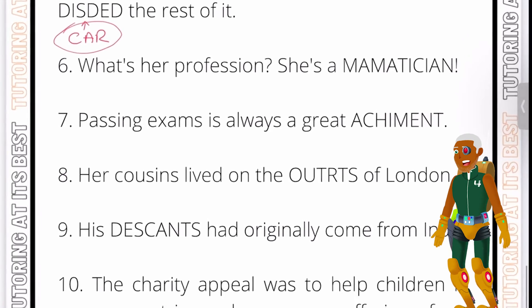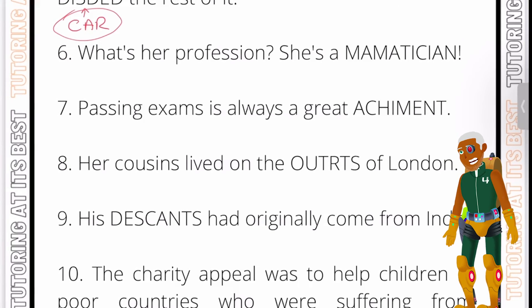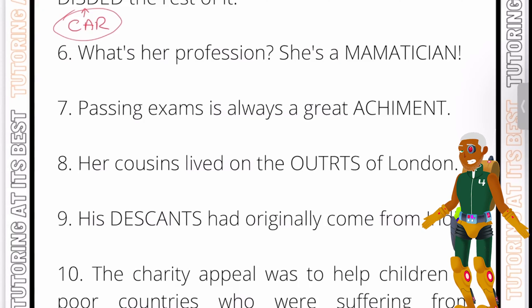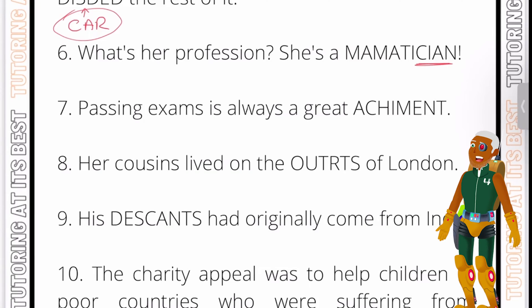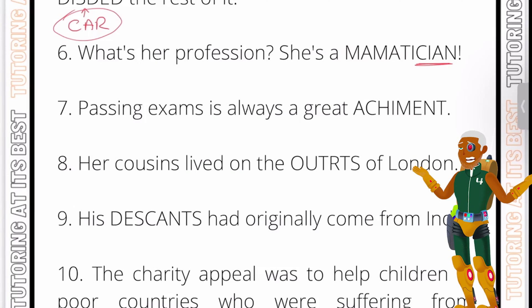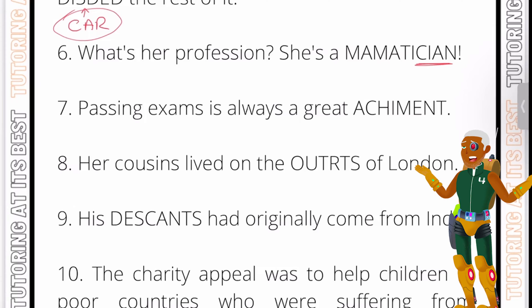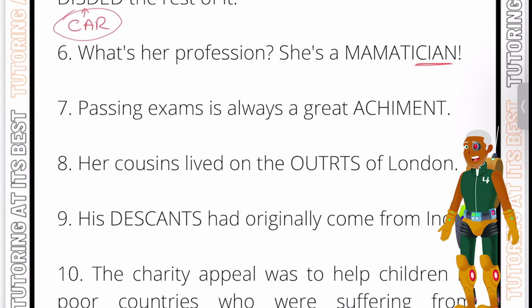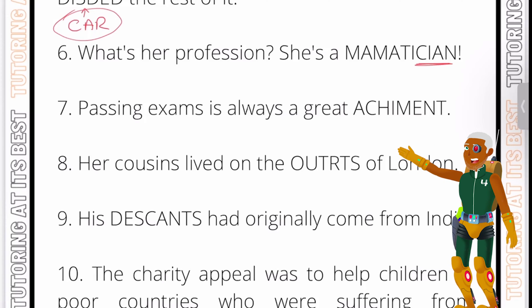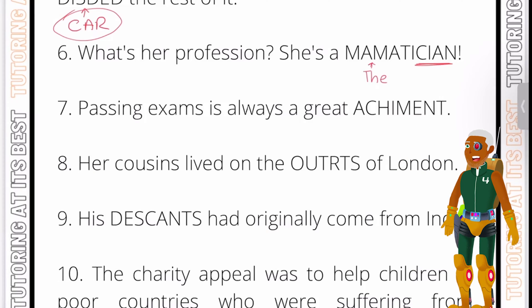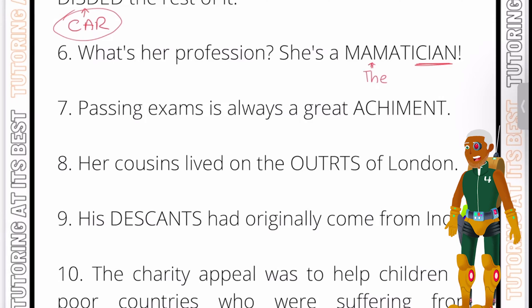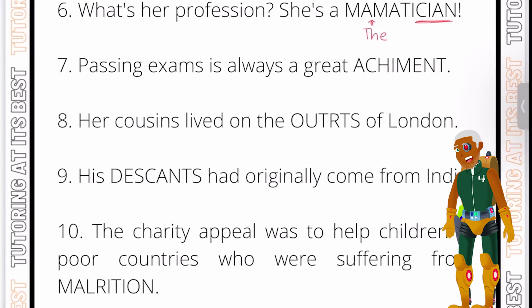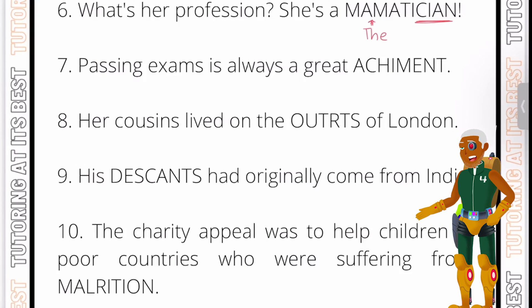Question six: 'What's her profession? She's a MAMMATICIAN.' Looking at the last part of the word — 'titian' — the missing three letters are T-H-E, going just after the first A, giving us 'mathematician'.